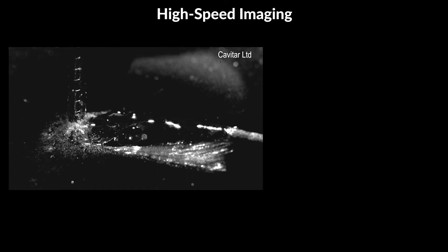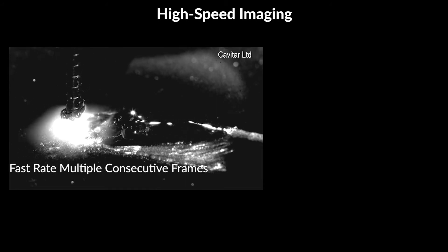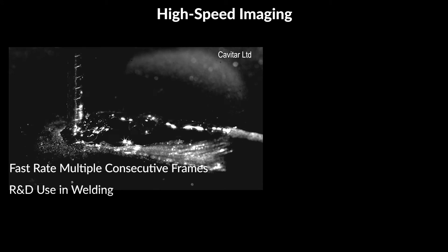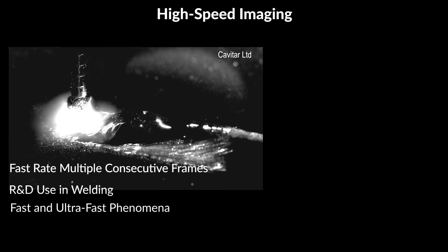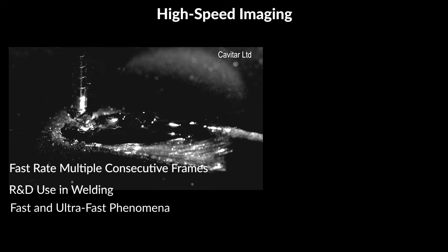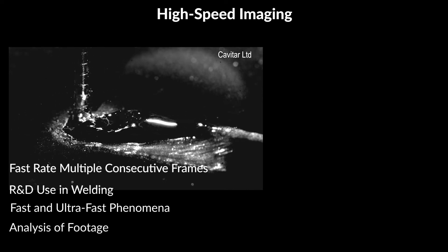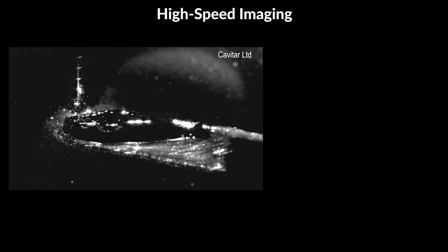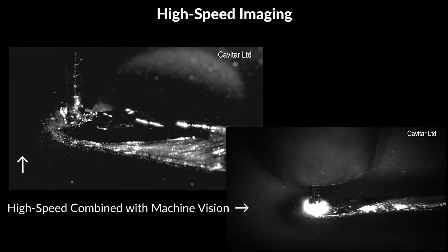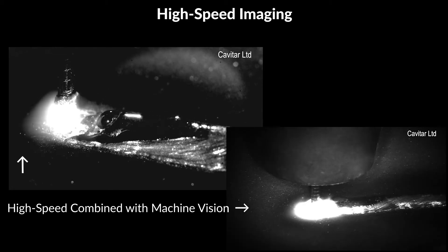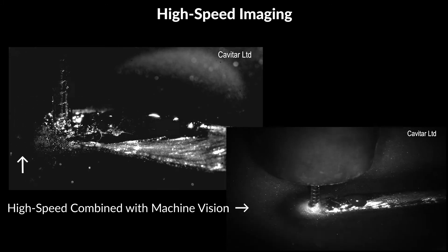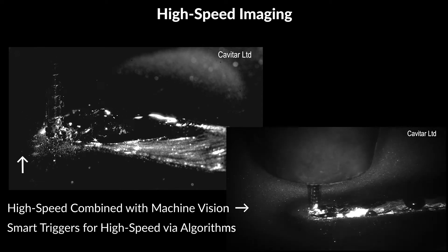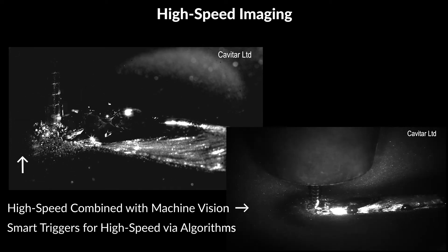High-speed imaging is defined as the capturing of multiple consecutive frames at a fast rate. In the welding industry, it is mainly used for research and development purposes. High-speed imaging makes it possible to see fast and ultra-fast phenomena in slow motion, which means that they can be analyzed carefully and their inner workings understood. A combination of machine vision and high-speed imaging can also be utilized in the monitoring of industrial welding processes. The analysis software can be programmed to trigger high-speed imaging when the algorithms detect a certain change or feature in the process that might be of interest for further analysis.